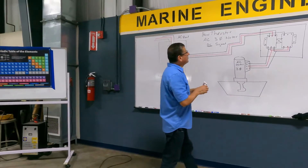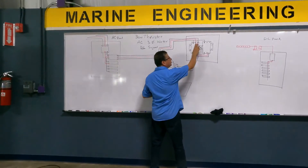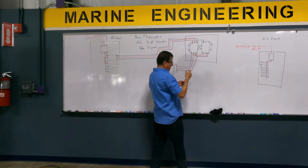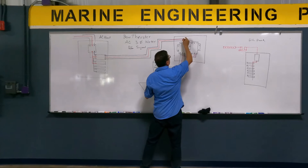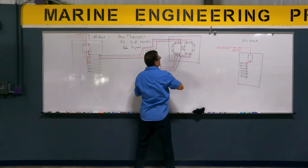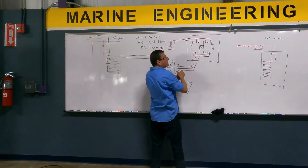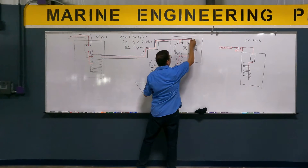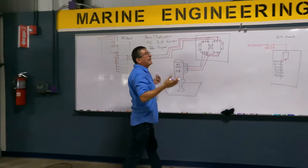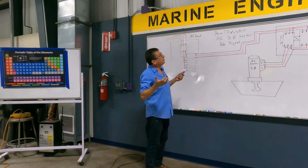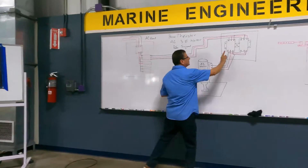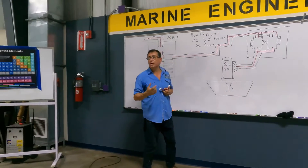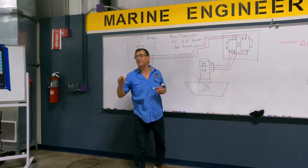Now here is the secret: I am going to switch those two phases in this contactor. The red phase is in the second slot — in this contactor it will be in the third slot. The purple phase is in the third slot — in the other contactor it should be in the second slot. That is the procedure to reverse the rotation of this AC three-phase motor when the bow thruster uses a three-phase reversible motor.